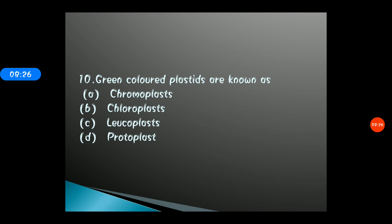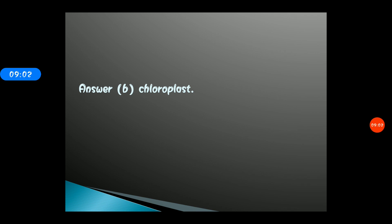Question 10: Green colored plastids are known as — options: A) Chromoplast, B) Chloroplast, C) Leucoplast, D) Protoplast. The correct answer is option B, Chloroplast. Chloroplasts are the green colored plastids containing the photosynthetic pigment chlorophyll, which is responsible for trapping sunlight and helping in photosynthesis — the process through which plants, being autotrophic, synthesize their own food.